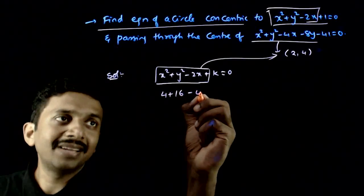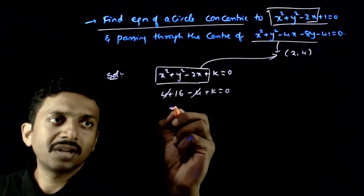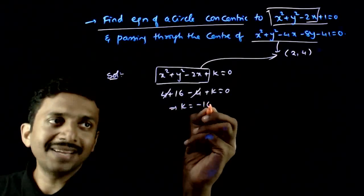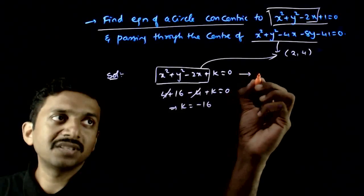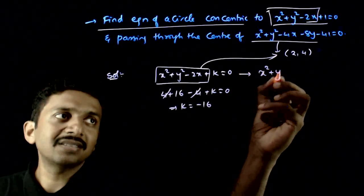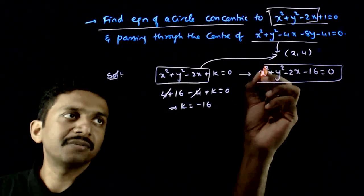16 minus 4 plus k is equal to 0. So k should be equal to minus 16. So if k is minus 16 here, the equation of the circle is x square plus y square minus 2x minus 16 is equal to 0.